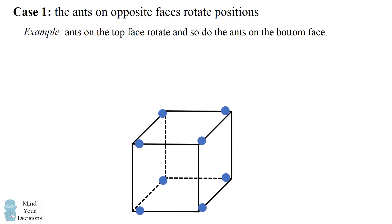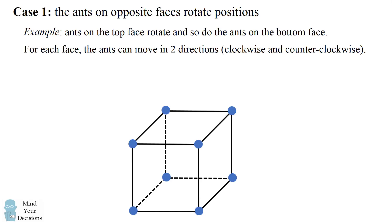Here's one way that the ants could move so that they would not collide. But that's not the only possibility for the ants on the top and the bottom faces. For each face the ants can move in two directions, either clockwise or counterclockwise. So we have to consider that there will be more possibilities.